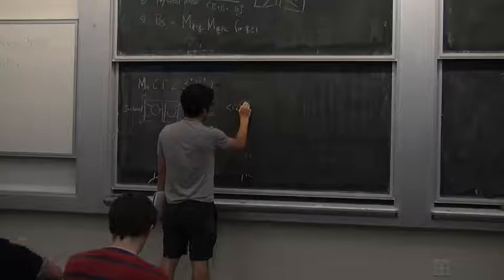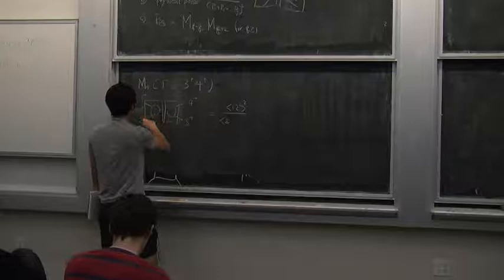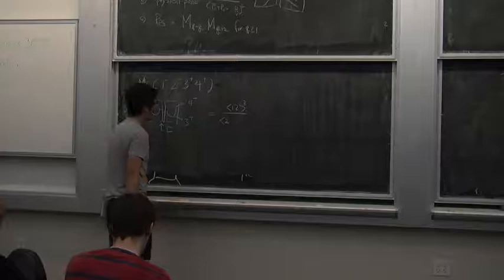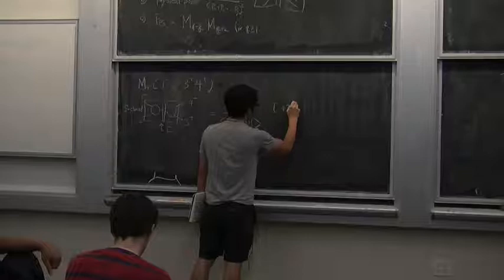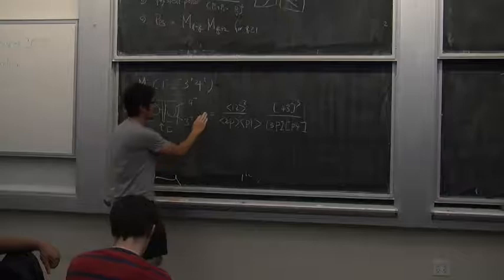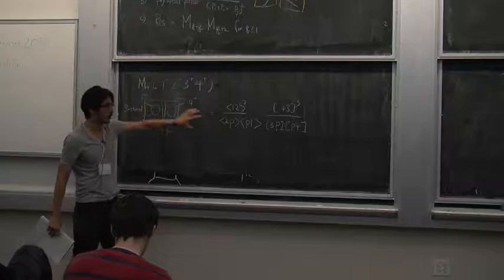So we have the three-point amplitude: one, two, P on one side, and three, four, P on the other side. This will be the residue that I should see. Once I get this function, it should reproduce this residue on the S-channel pole. In order to see precisely what this constraint looks like, I want to massage this into something only in terms of external particles' momenta.